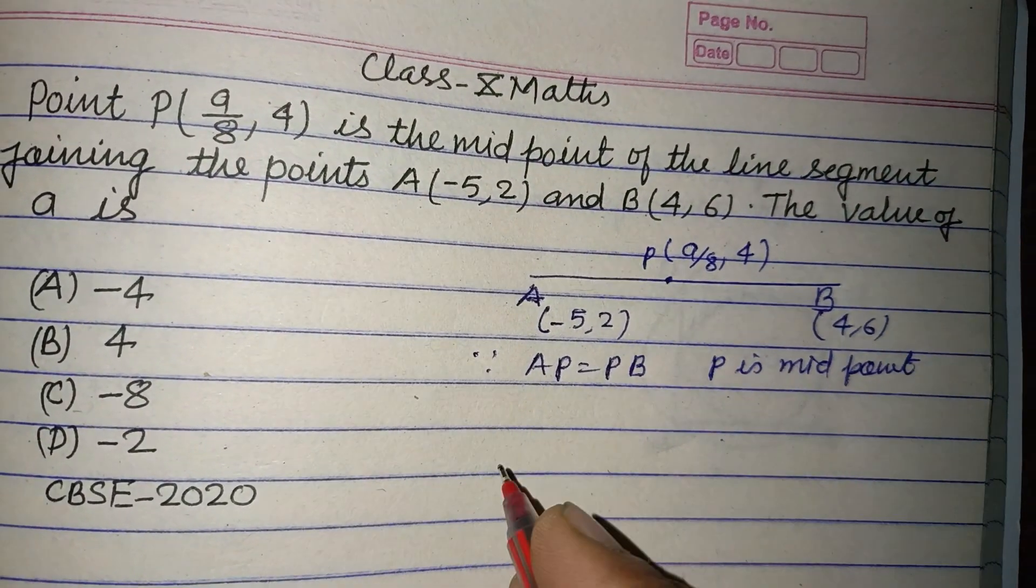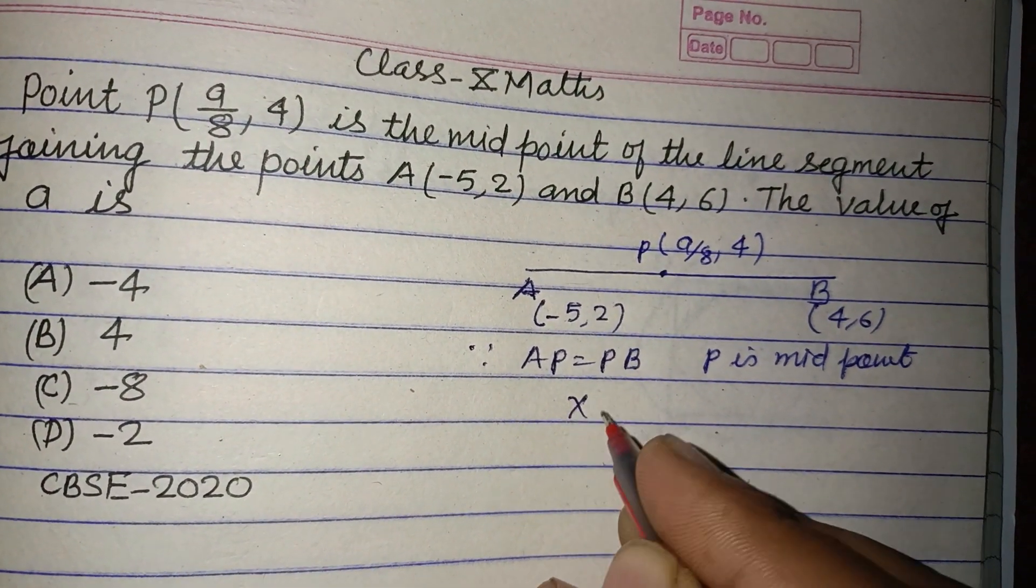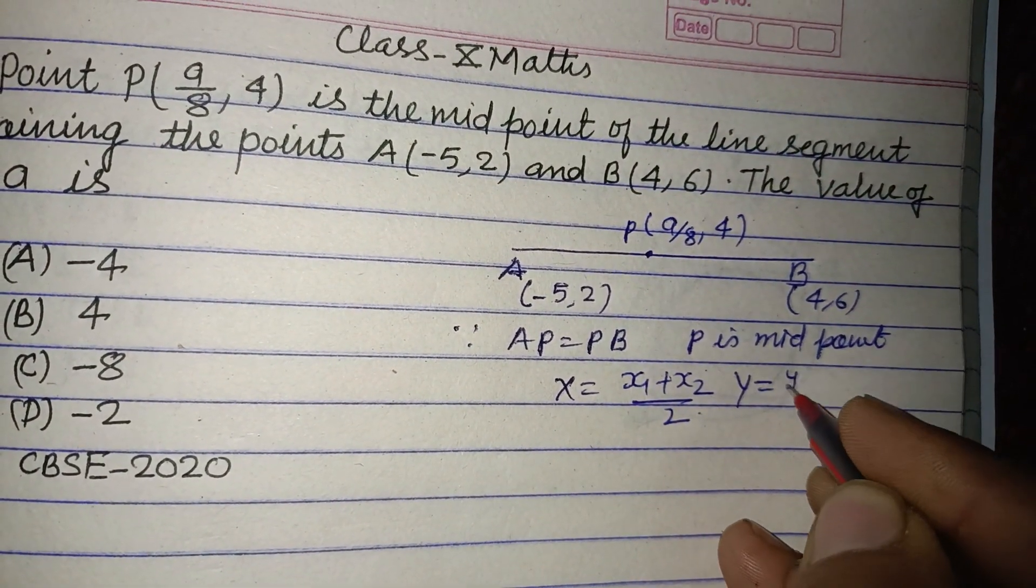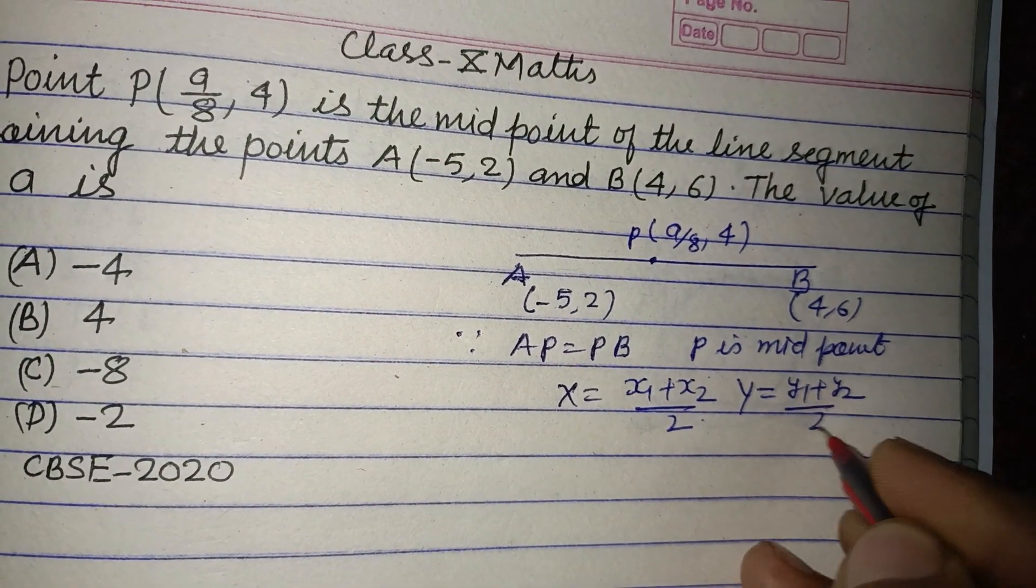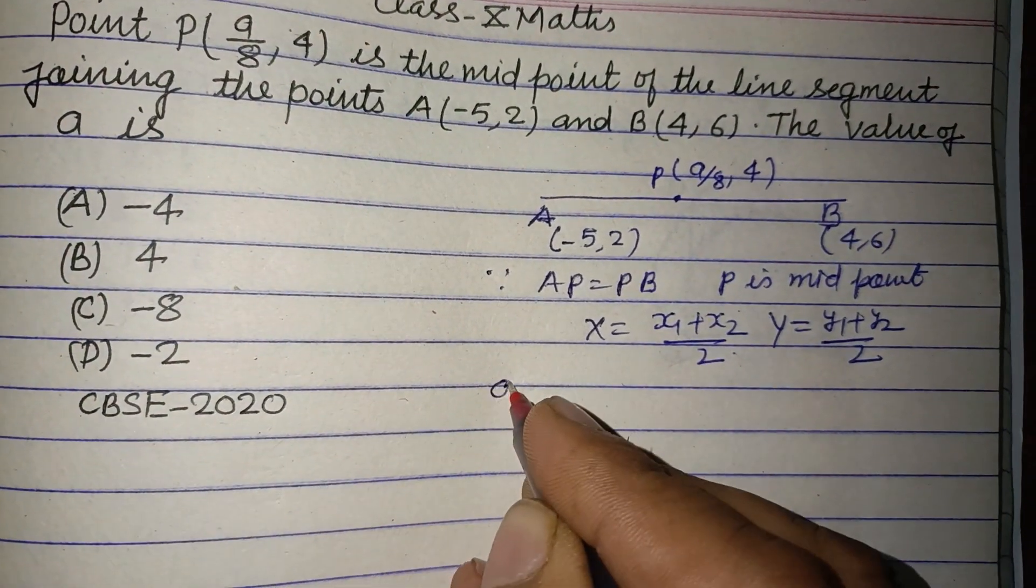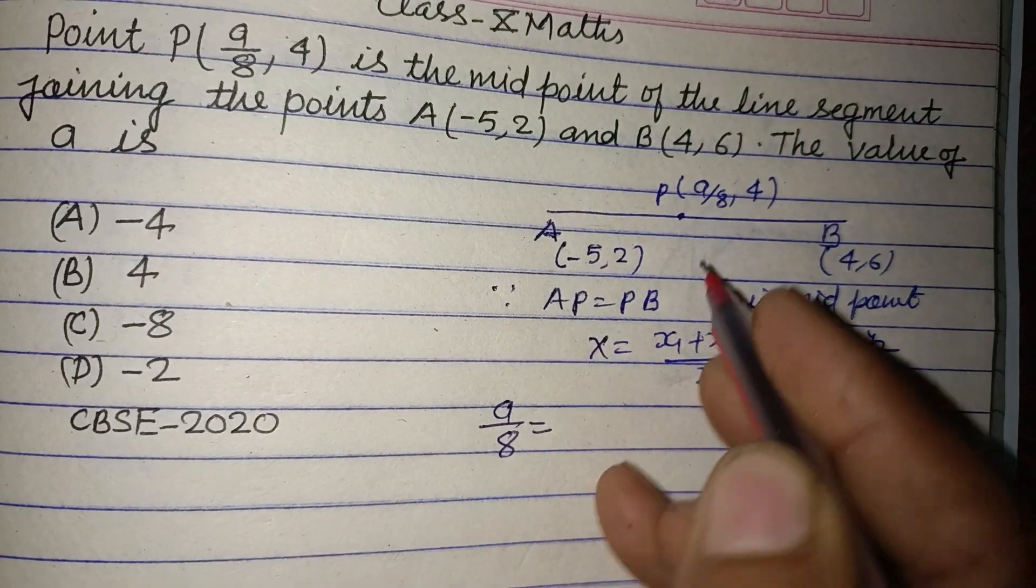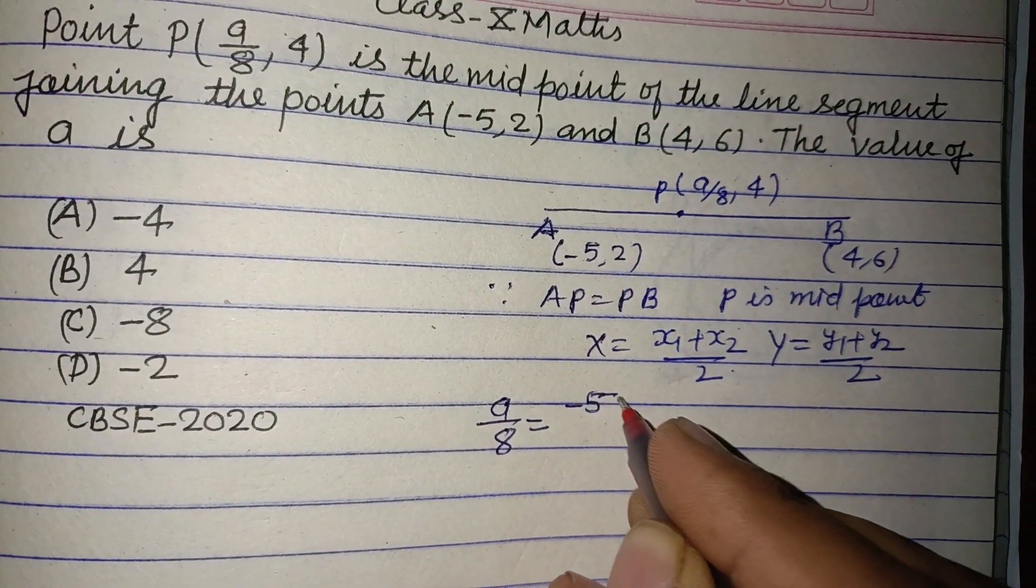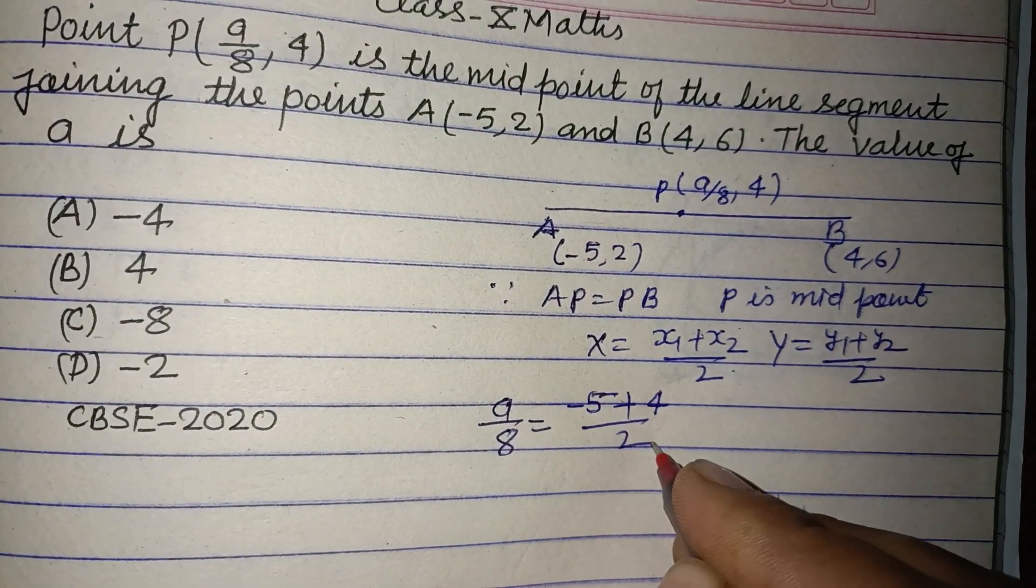So the coordinate of midpoint is x equals (x1 plus x2)/2 and y equals (y1 plus y2)/2. So here we want to find out x: a/8. Here x1 is -5 and x2 is 4, divided by 2.